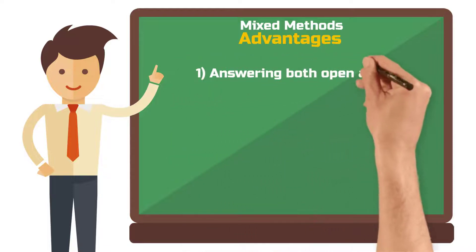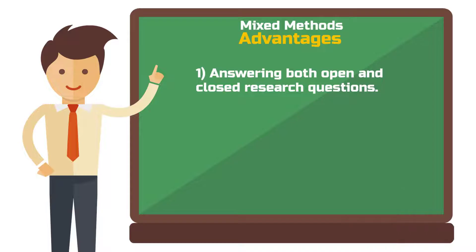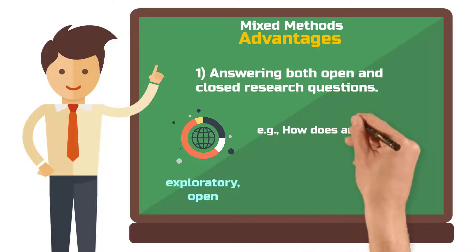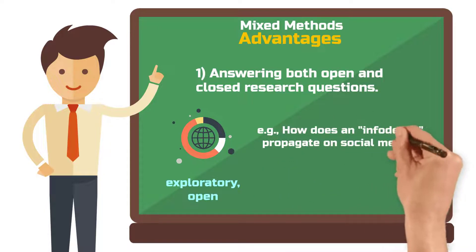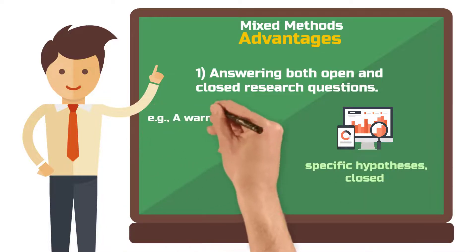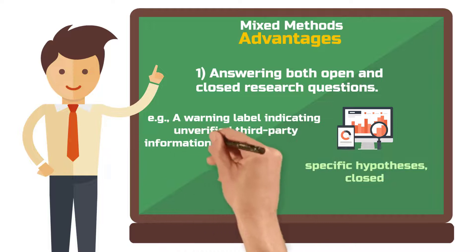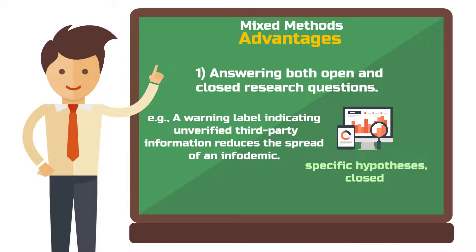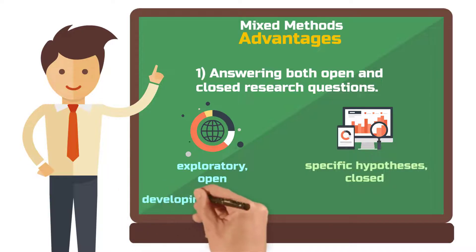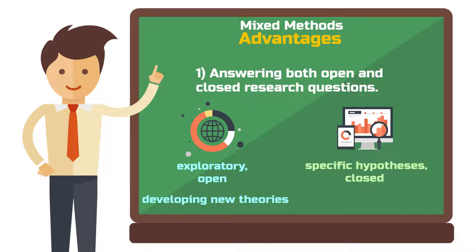First, mixed methods can simultaneously answer open and closed research questions. Through the qualitative part you can explore and answer an open research question — for example, how does an infodemic, meaning a massive spread of misinformation, propagate on social media. With the quantitative part you can test specific hypotheses, such as whether a warning label indicating unverified third-party information reduces the spread of an infodemic. Qualitative methods often aim at developing new theories, so-called exploratory research, while quantitative methods typically test existing theories, so-called confirmatory research.